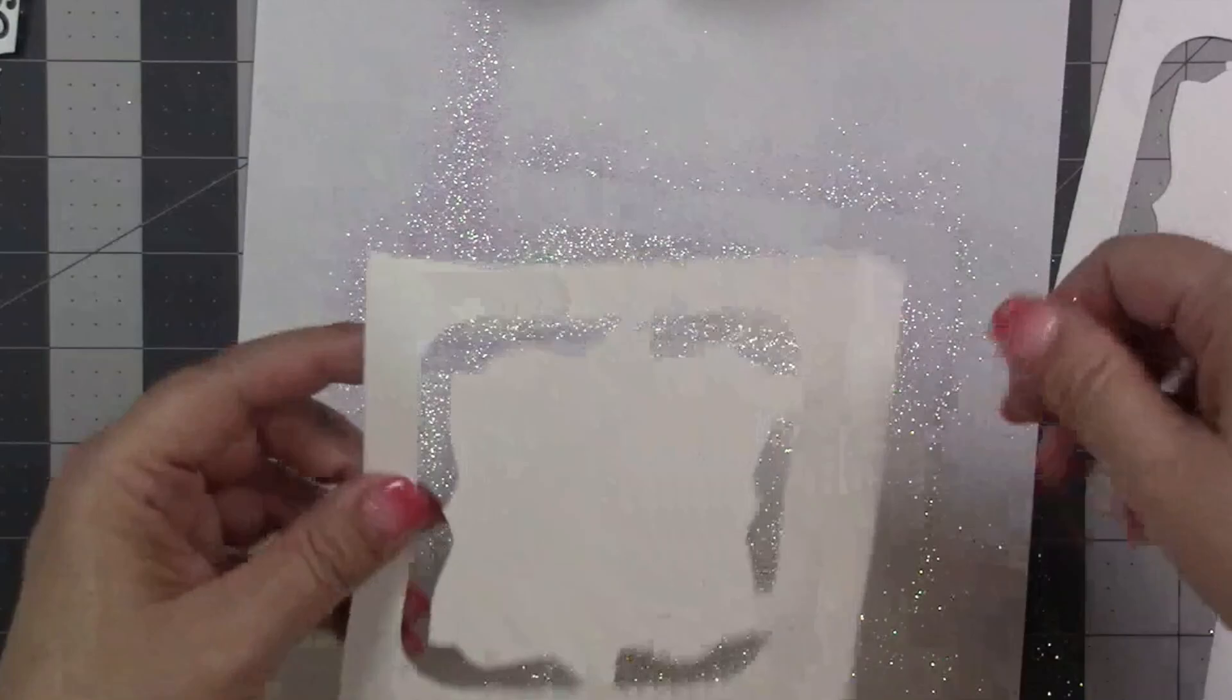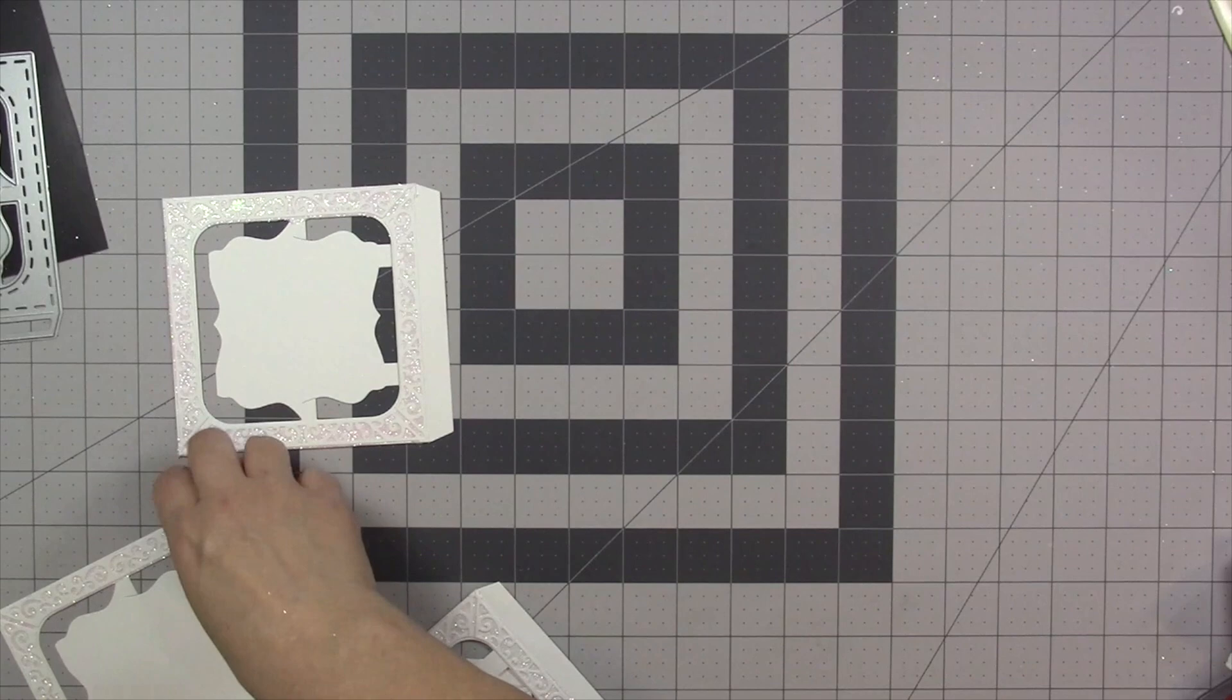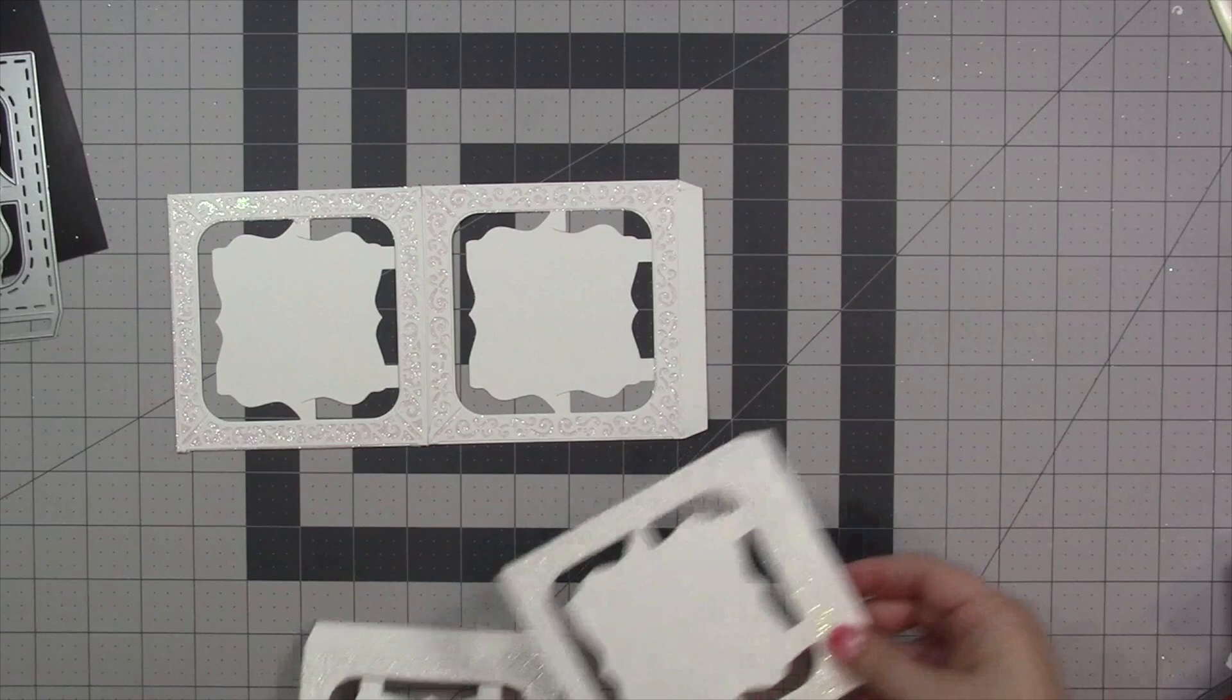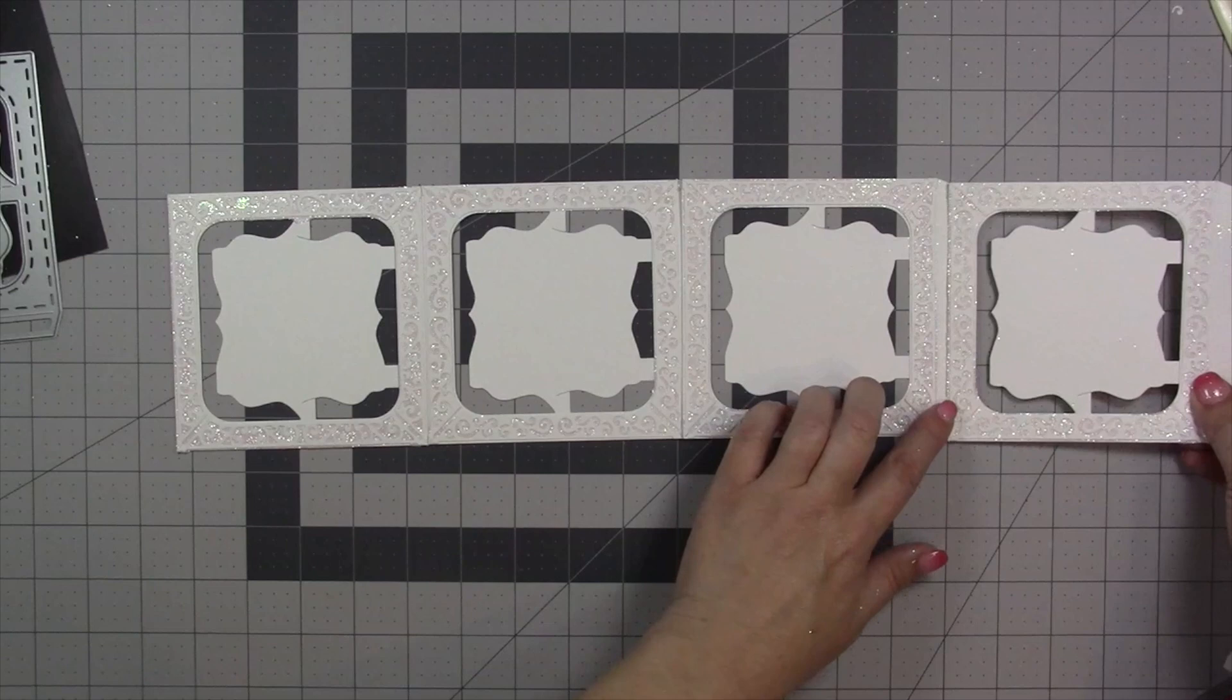For this first page I repeated that process for the back of the frame as well because that's going to be the first page, it needs to be decorated on both sides. But for the other ones I just decorated the one side. What I'm going to do now is line these all up with tabs facing to the right. Since there are two styles of frame I just alternated between the pages.